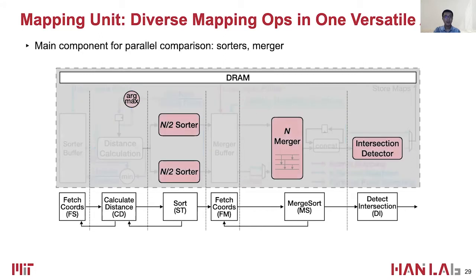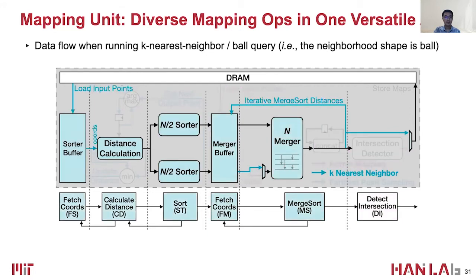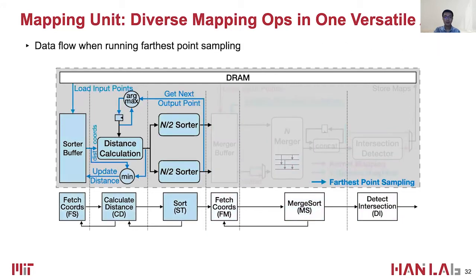The main components for the parallel comparison are the sorters and the merger. Running different mapping operations is just configuring the data flow in the mapping unit.